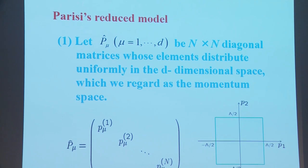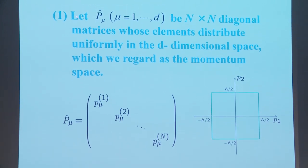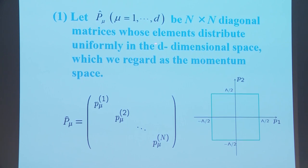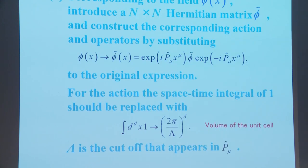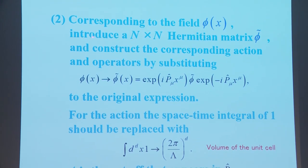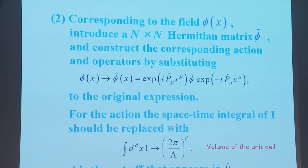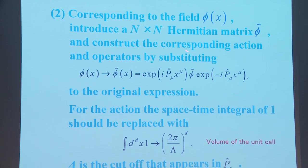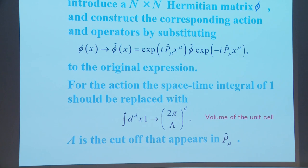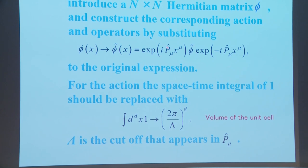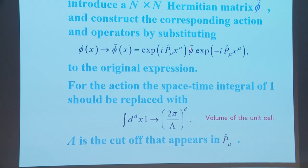Here I introduce Parisi's reduced model, constructed as follows. Let P_μ be N×N diagonal matrices whose elements distribute uniformly in d-dimensional space, which we regard as momentum space — so the P_μ's are simultaneously diagonalized. Corresponding to the field φ(x), we introduce an N×N Hermitian matrix φ̃, and construct the corresponding action and operators by substituting the expression for φ̃ into x. φ̃ is defined as a combination with exponential factors e^{ipx} and e^{-ipx}. Substituting this expression into the original yields the reduced model action and operators.